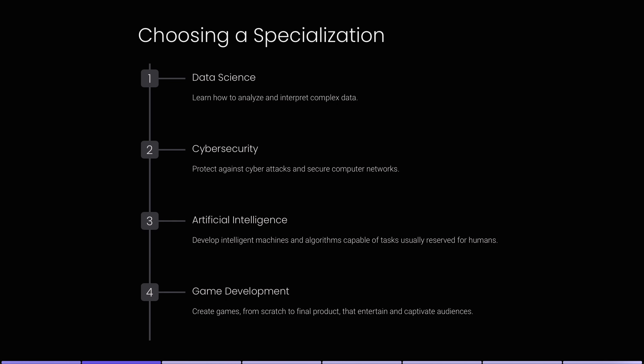First, you want to choose a specialization. When you're getting a computer science degree, you don't have to necessarily go into one of the four specific fields. You can just go into regular software development, but these are basically the specializations. I'll break down each one briefly just so you have a brief understanding of it, and if you already know what these are, you can skip ahead to the other sections.